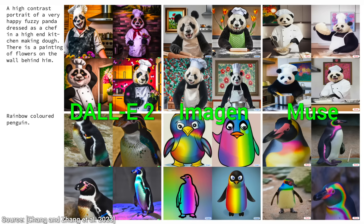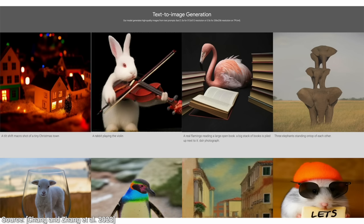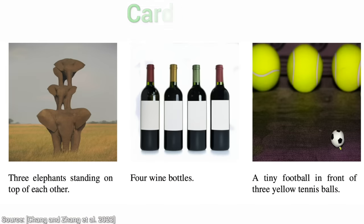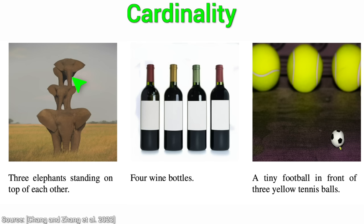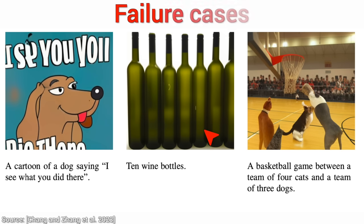And it can also perform things that other previous techniques had a great deal of trouble with. Two examples: cardinality and composition. Cardinality means that if we ask for three elephants standing on top of each other, we really get three. And if we ask for four bottles of wine, we get four. And if we ask for ten bottles of wine — well, apparently not even this technique is perfect.